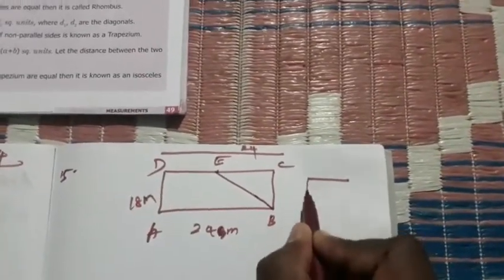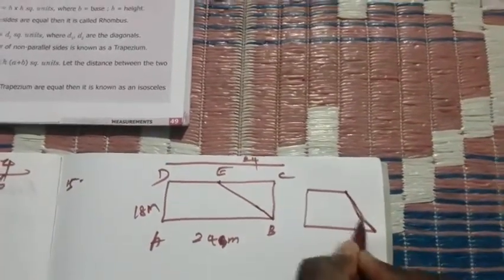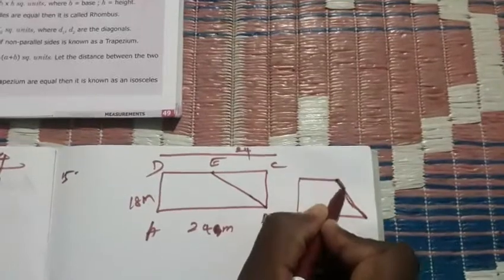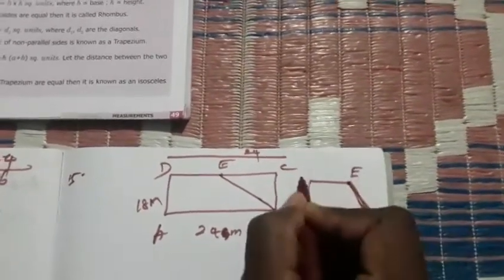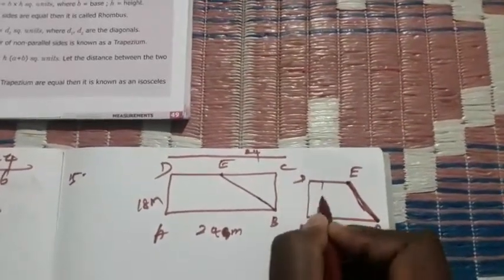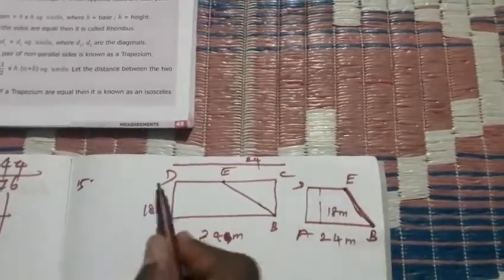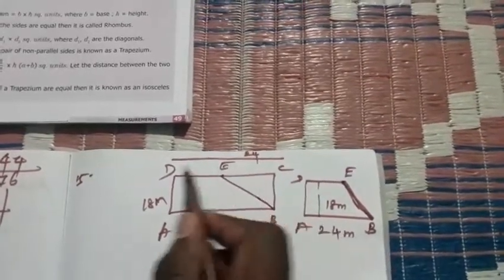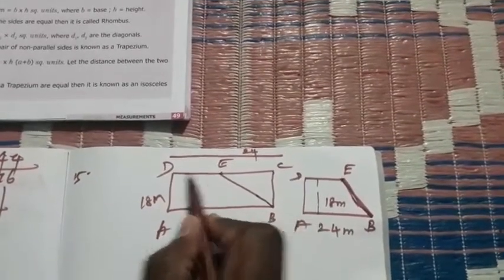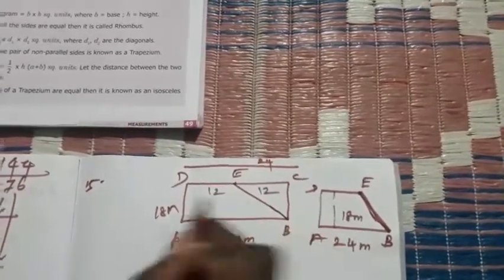Then draw the shape of trapezium. You see? So you want to come straight line. Then A, B, E, D. This is 24 meters. Height is 18 meters. Then E is the midpoint of DC. Total 24. It is the midpoint, so it is equal to divide by 2. We get 12. This is also 12. Then we get 12.